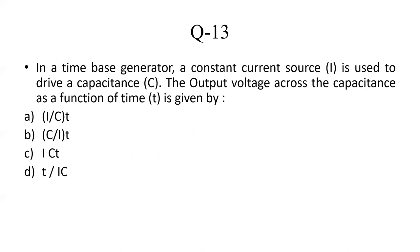The next question: in a time-based generator, a constant current source I is used to drive a capacitance C. The output voltage across the capacitance as a function of time T is given by — Options: I/C × T; C/I × T; ICT; T/IC. This is based on the simple capacitor formula. The correct answer is Option A: I/C × T.